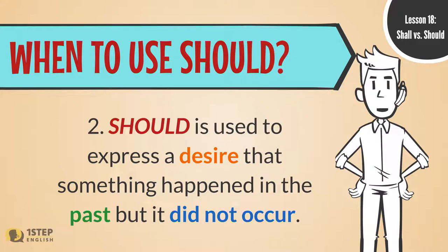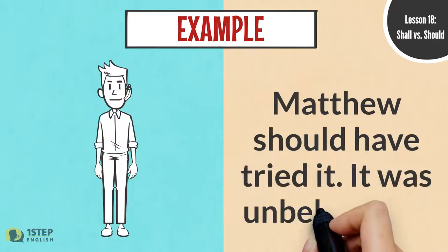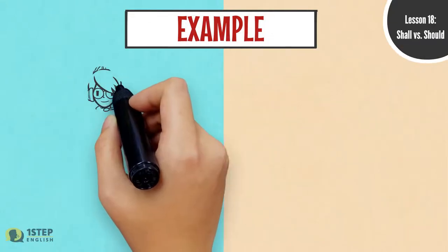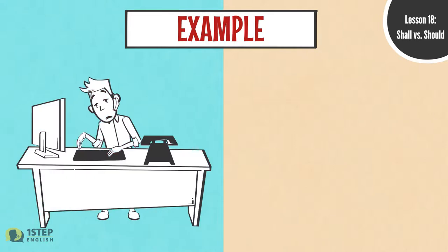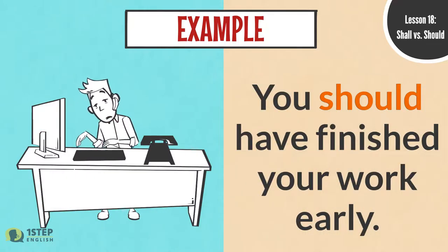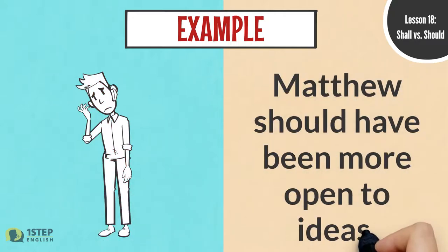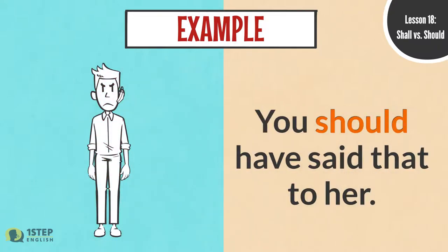Number two, should is used to express a desire that something happened in the past but it did not occur. For example: Matthew should have tried it — it was unbelievable. Sophie should have come to the party. You should have finished your work early. Matthew should have been more open to ideas. You should have said that to her.